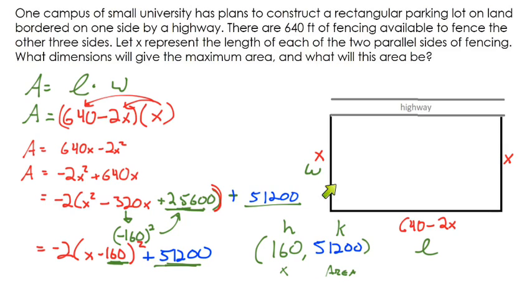So basically, by making this length 160 and this length 160, and this being whatever's left over, whatever 640 minus 160 times 2 is, that's going to give you the maximum area of this rectangle, and that area is going to be 51,200 square feet.